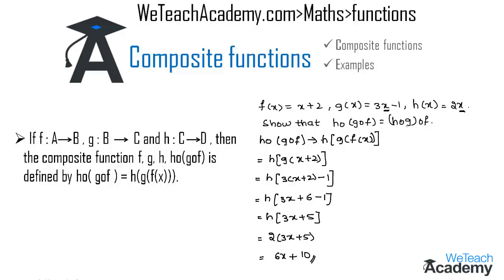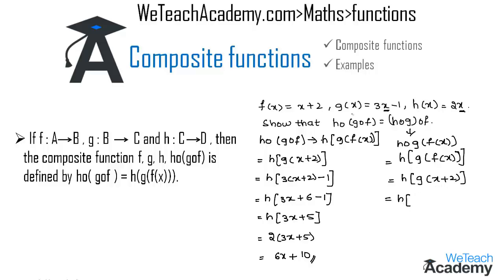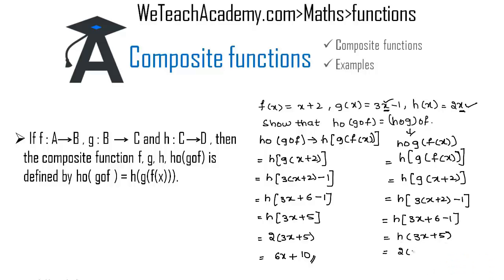Now let us consider h circle g circle f, defined by h of g of f of x. Here f of x is x plus 2. Finding g of x plus 2, we get h of 3 into x plus 2 minus 1. Multiplying 3 with x plus 2 gives h of 3x plus 6 minus 1, written as 3x plus 5. Replacing x with 3x plus 5 in h of x gives 2 into 3x plus 5, which implies 6x plus 10.